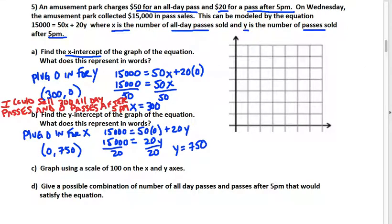We're supposed to write in words what that means. If I sold zero X's, or zero all-day passes, I would have sold 750 Y's, which are the passes sold after 5 p.m. So I could sell zero all-day passes and 750 after 5 p.m. passes.